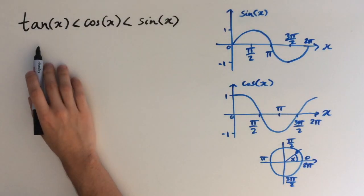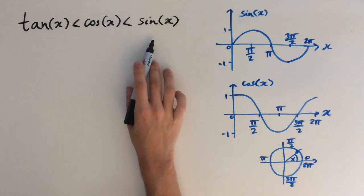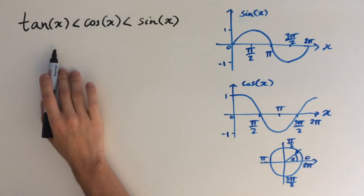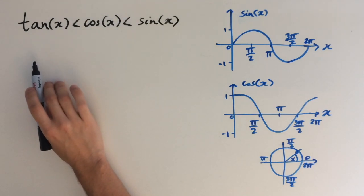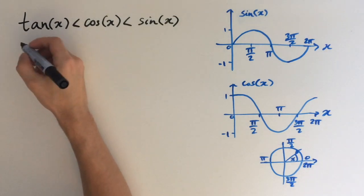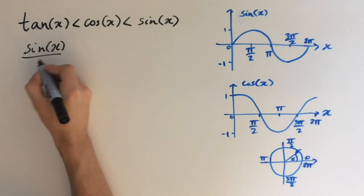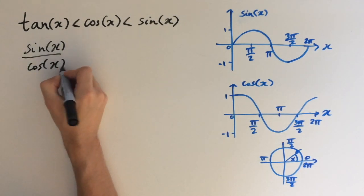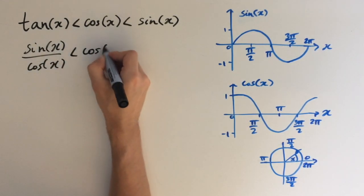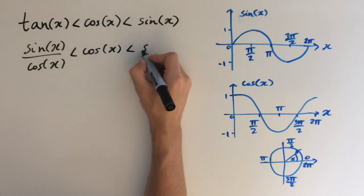The inequality given is tan(x) < cos(x) < sin(x). Using the identity that tan(x) = sin(x)/cos(x), this inequality is equivalent to sin(x)/cos(x) < cos(x) < sin(x).